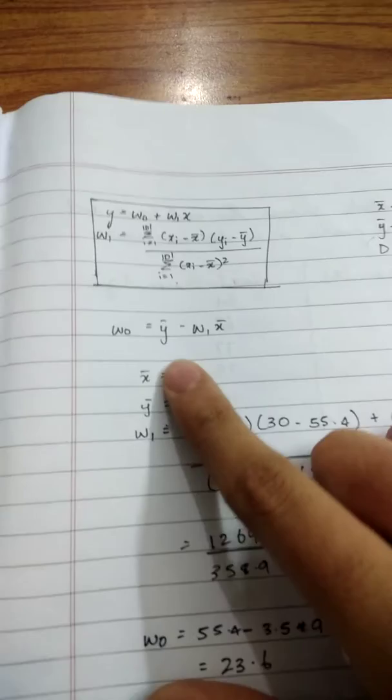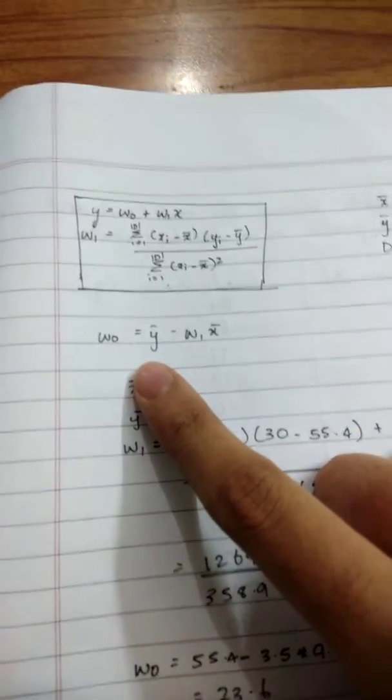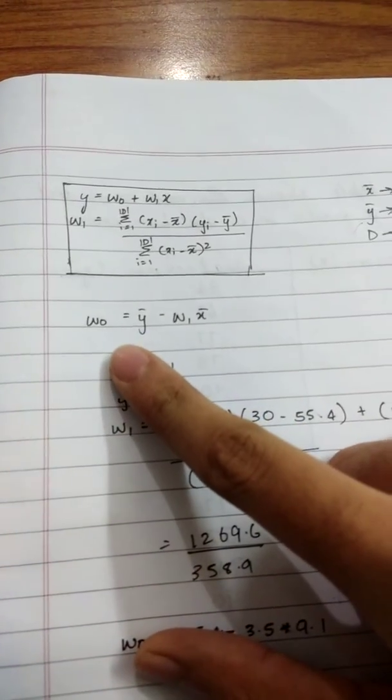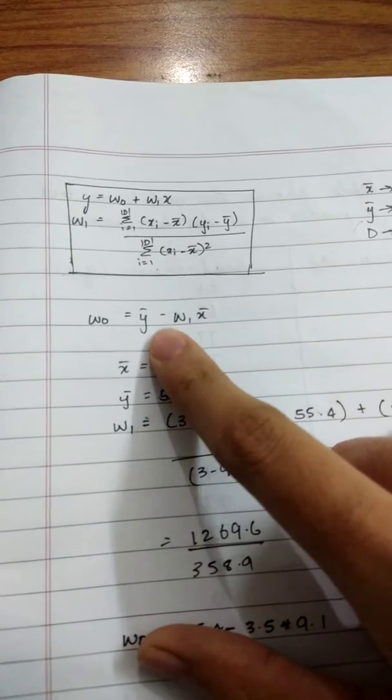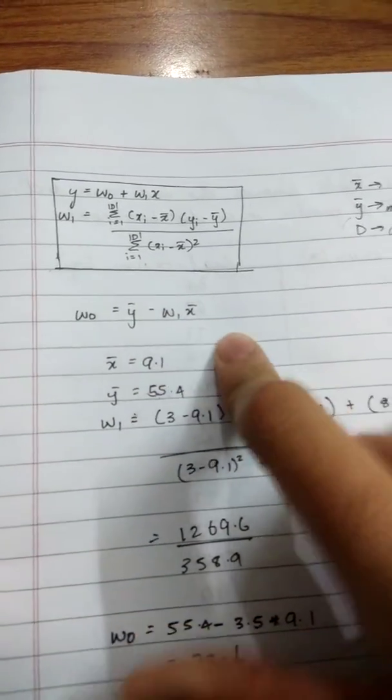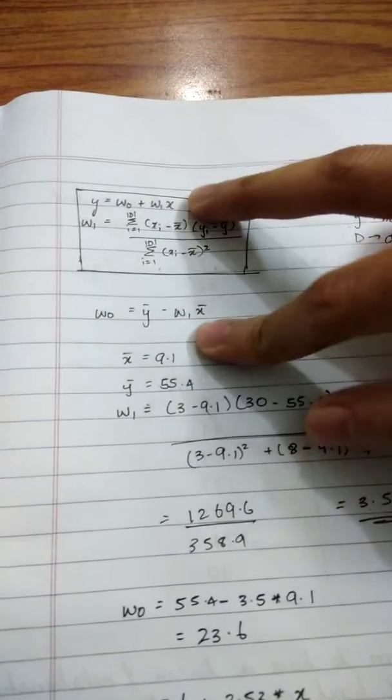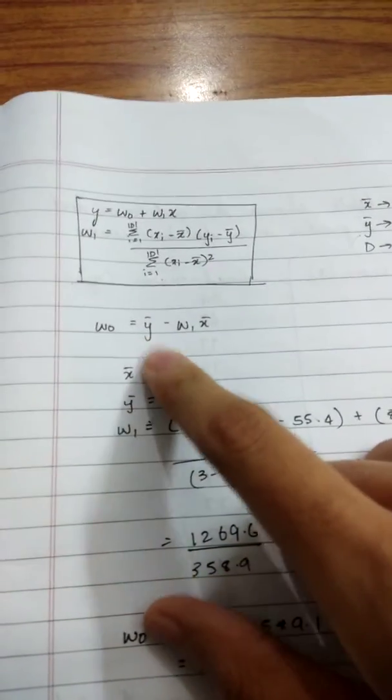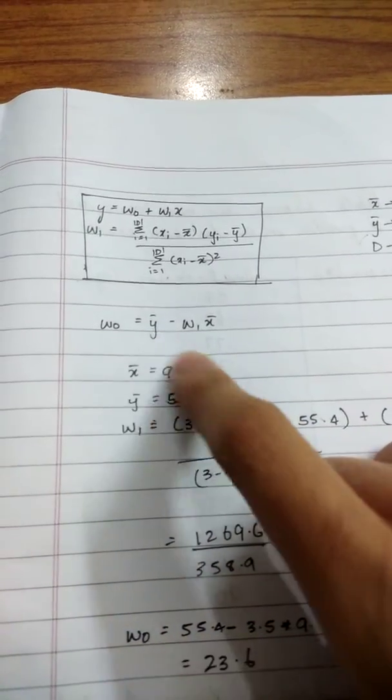The formula for W₀ is W₀ equals Ȳ minus W₁X̄. This is similar to the first formula, just that Y and X have been replaced by the mean of those values.